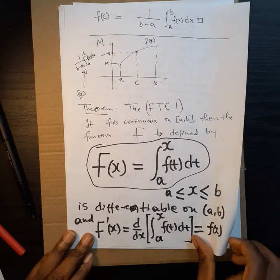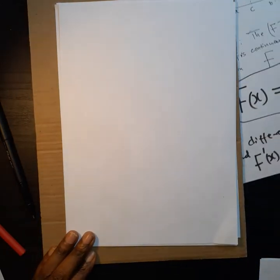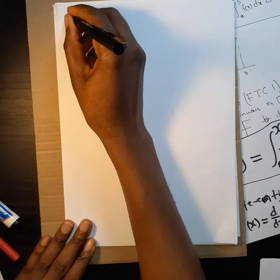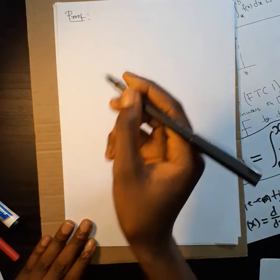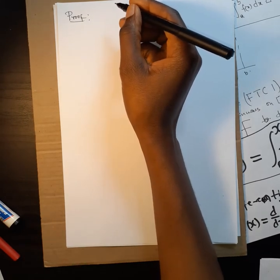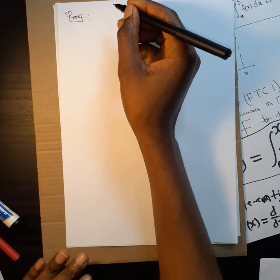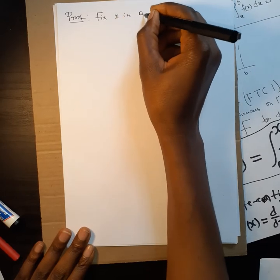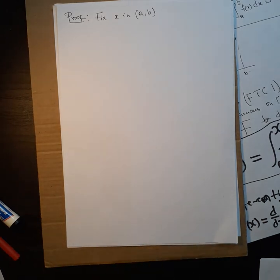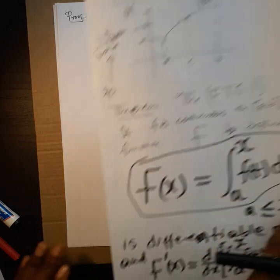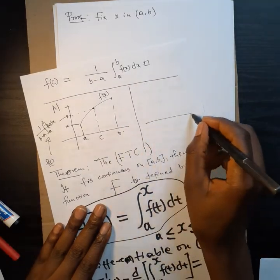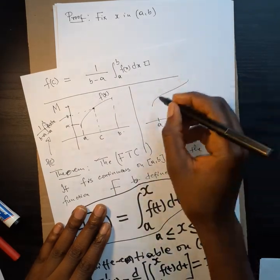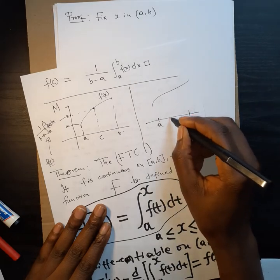The derivative of F(x) equals d/dx of the integral from a to x of f(t) dt, which equals f(x). Let us now prove this. We fix x in [a, b] — that is, we choose a point x somewhere inside the interval where our continuous function is defined.